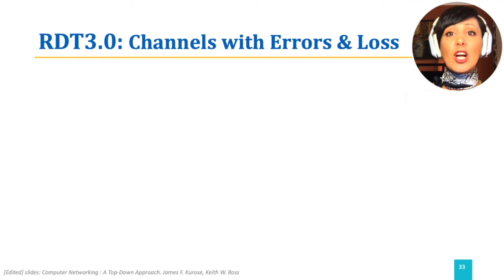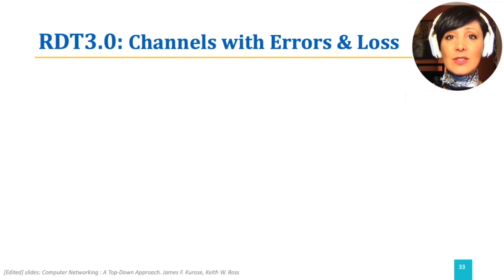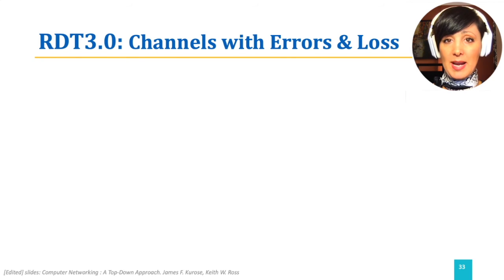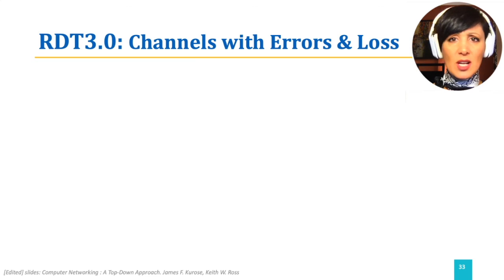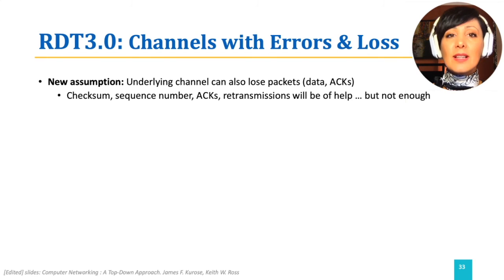By far, our underlying channel assumptions were a little bit closer to reality, having channel errors causing bit flips and corrupted packets. However, we did not consider loss. In the design of our RDT3, we assumed that underlying channels can also cause lost packets.